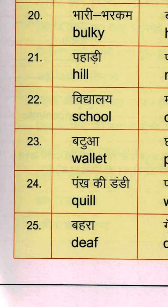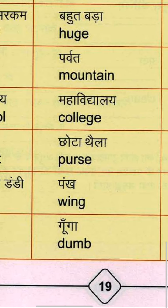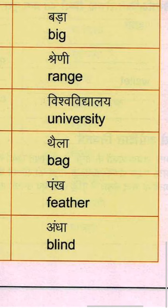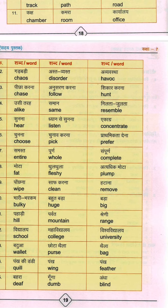Twenty-fifth group: Bahra, meaning one who cannot hear, is Deaf — D-E-A-F. Gunga means Dumb — D-U-M-B. And Andha means Blind — B-L-I-N-D.